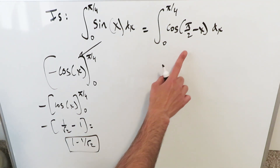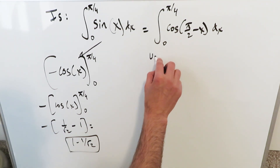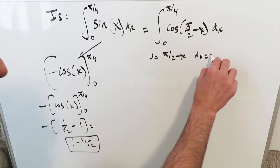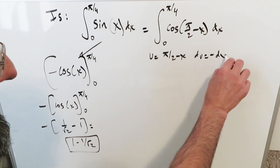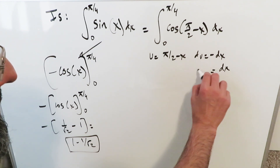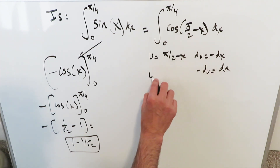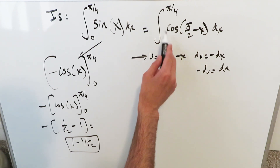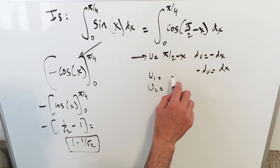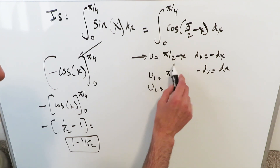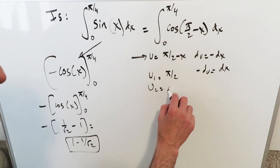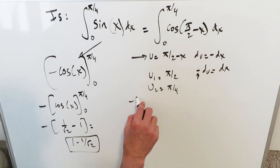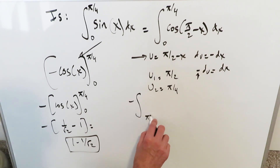Now look at the right-hand side. Do a u-substitution: let u = π/2 − x, then du = −dx, so dx = −du. Computing new limits: when x = 0, u = π/2; when x = π/4, u = π/2 − π/4 = π/4. After substitution, the minus sign gives a larger limit on the bottom and a smaller limit on top.